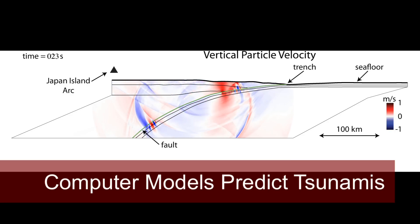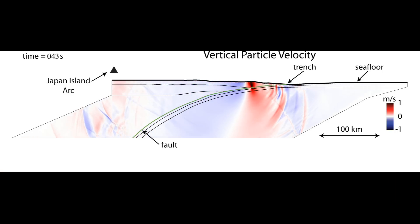Our models show that as the rupture propagates up the fault, waves reflect off of the seafloor, come back down to the fault. They serve to unclamp the fault, release the pressure that's acting on it, and allow it to slip.